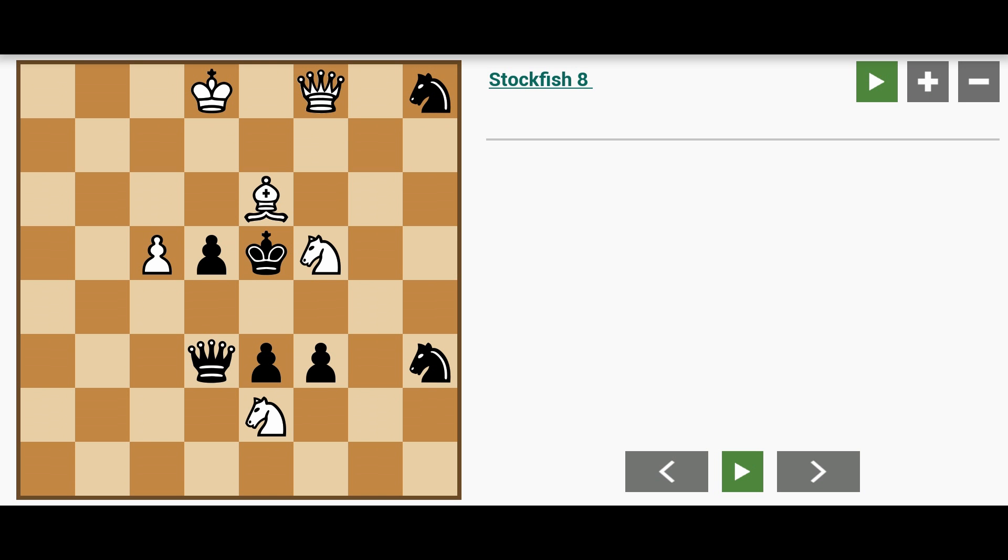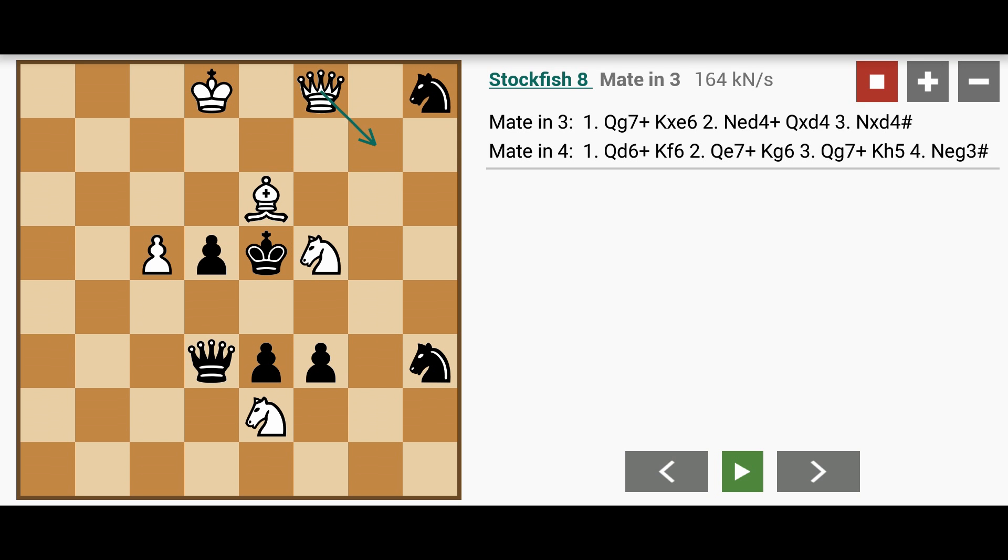I will now show you the solution by adding the lines of analysis. So the key move here is queen to g7 check.